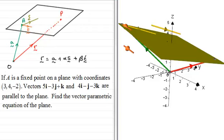Now I've got an example here which is very easy, just based on the parametric vector form then for the equation of a plane. If A is a fixed point on a plane with coordinates (3, 4, -2), vectors 5i - 3j + k and 4i - j - 3k are parallel to the plane, find the vector parametric equation of the plane.